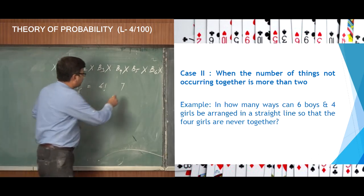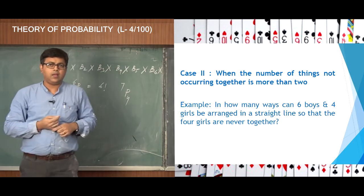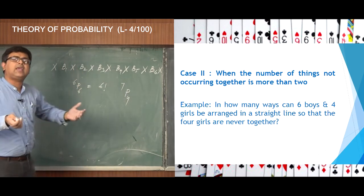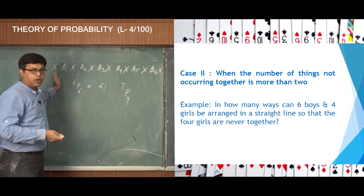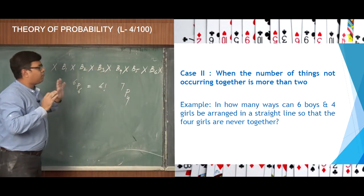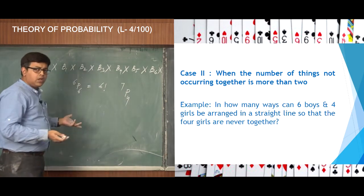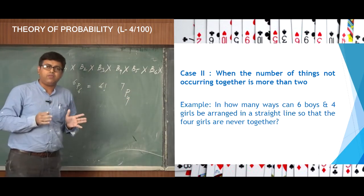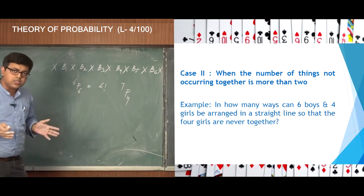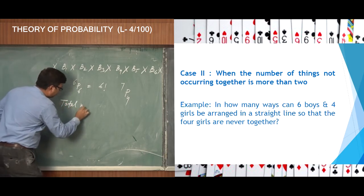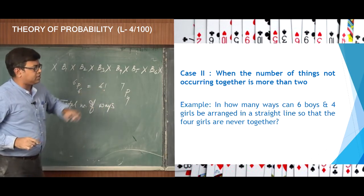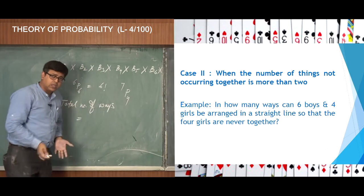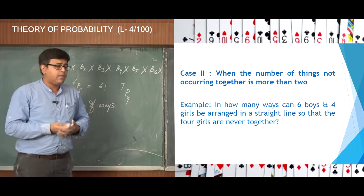Now I have to insert the four girls into any one of the seven positions. There are seven places to fill up with four girls, which is exactly the situation of arranging n things taken r at a time. Seven places filled by four girls can be done in 7P4 ways, because there are seven places and four girls. So 7P4 is the number of ways the four girls can be arranged such that they will never come together, and 6 factorial is the number of ways to arrange the six boys.